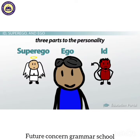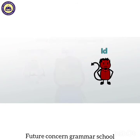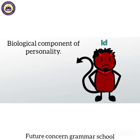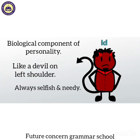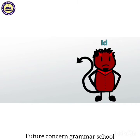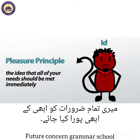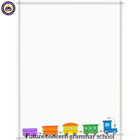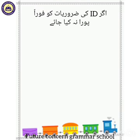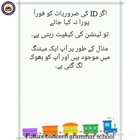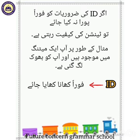First one is id — id is the biological component of personality. Id ki misal bilkul us devil ki tarah hai jo cartoon ke shoulder par tha, jo hamesha selfish aur needy hota hai. It works on the pleasure principle. Is principle ke mutabiq, id yeh demand karti hai keh meri tamam needs ko abhi ke abhi — foran — poora kiya jaye. Agar id ki needs ko foran poora na kiya jaye toh tension ki state exist ho jaati hai. For example, agar aap ek meeting mein hain aur aapko meeting ke darmayan bhouk lag gayi hai, toh aapki id aap se demand karegi keh foran khaana kha kar apni need fulfill ki jaye. Agar aapki personality mein id dominant hai, toh jab tak aap khaana nahin kha lenge, aap ek anxiety ya tension ki state mein rahenge.